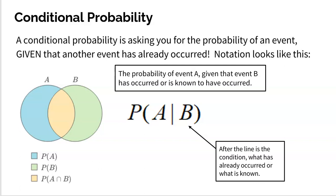So the notation looks like this, and understanding the notation is really important. We ask P for probability or percentage or proportion, and then in the parentheses we see this line. In front of the line is what we're looking for — what are we trying to find the probability of? That's A in this case. But after the line comes the condition — we know that B has already occurred. So this is read: we're finding the probability of event A given that event B has already occurred. In English, you might say: if B has already occurred, what is the probability of event A occurring? Or: what's the probability of event A occurring, given that event B has already occurred?